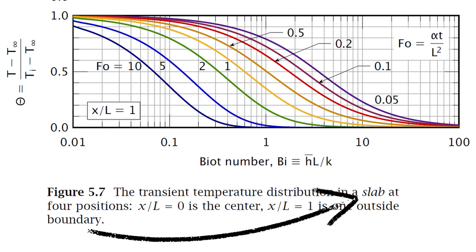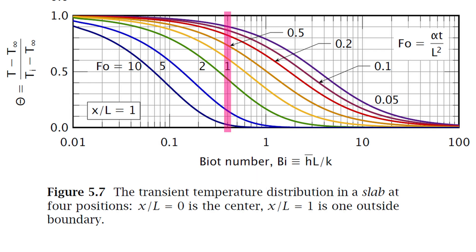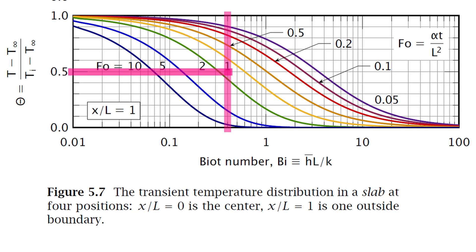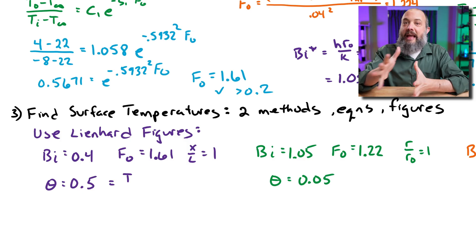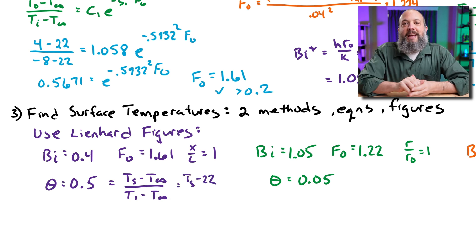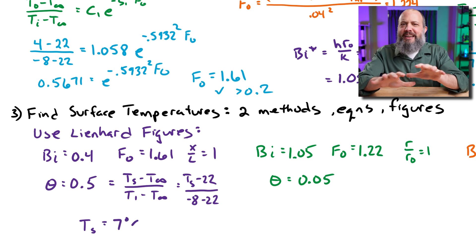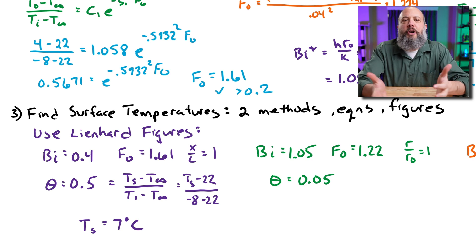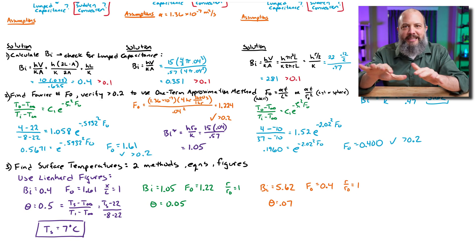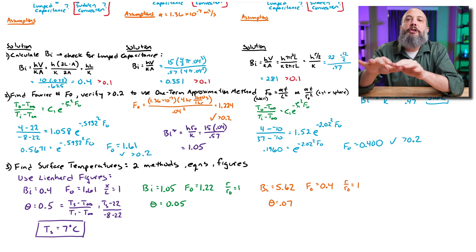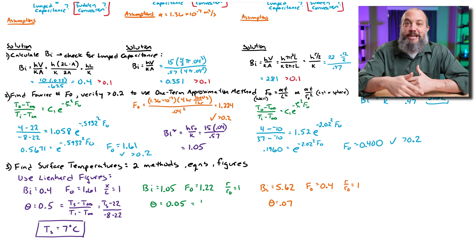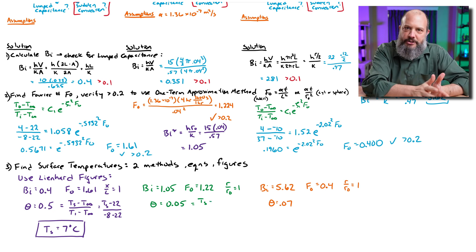As an example, for my steak (plain wall): going to the horizontal axis at 0.4 Biot number, a Fourier number of 1.6 falls between the yellow and green lines, slightly closer to the green line at Fourier number 2. Tracing over to the left, I land right on a theta value of 0.5. That theta is the ratio (T − T∞)/(T_initial − T∞). With ambient temperature 22°C and initial temperature −8°C, solving gives a surface temperature of 7°C. A very small theta means you're close to ambient; a high theta means you're still near initial temperature.